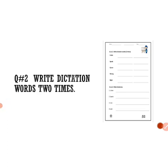Now open page number 52. Write date and day and write your classwork. Question number 2: write dictation words two times. We have read the dictation list, and you have to write these dictation words two times here. Question number 3: Make sentences using listen, speak, live, and look. These four words are given and you have to make sentences with them.